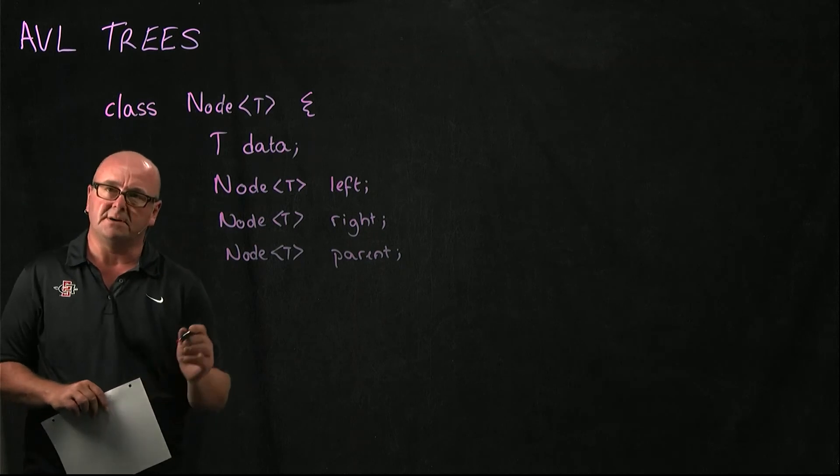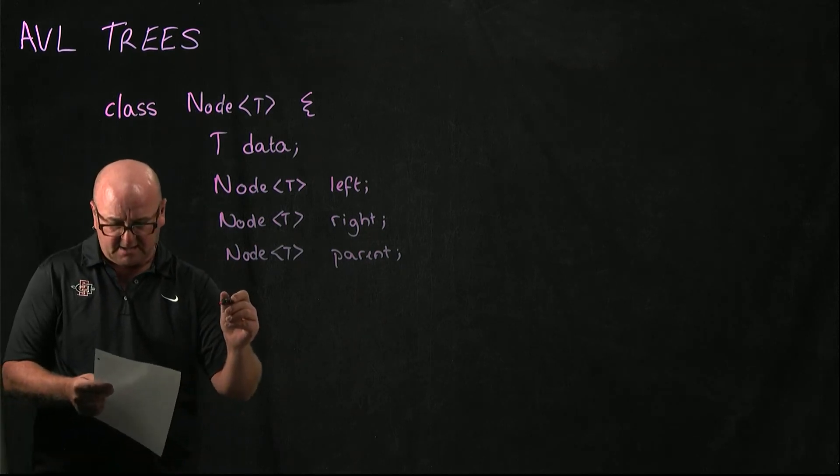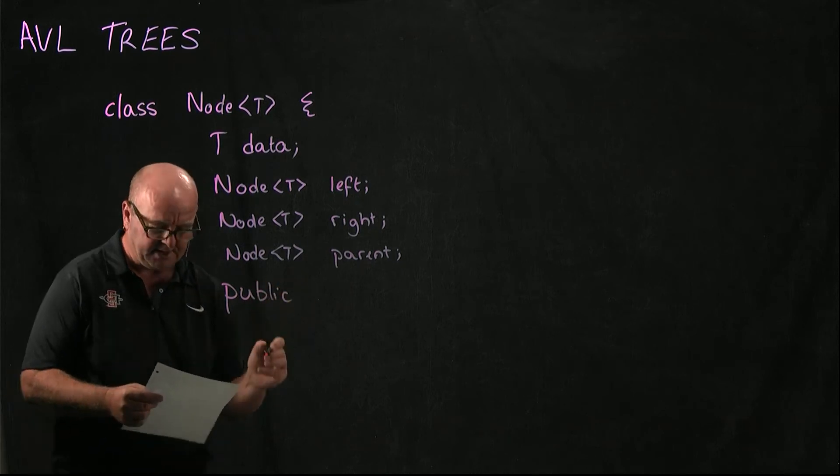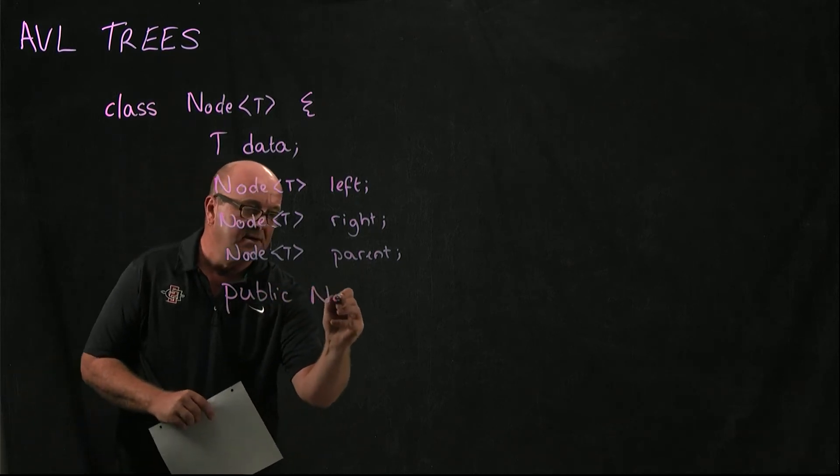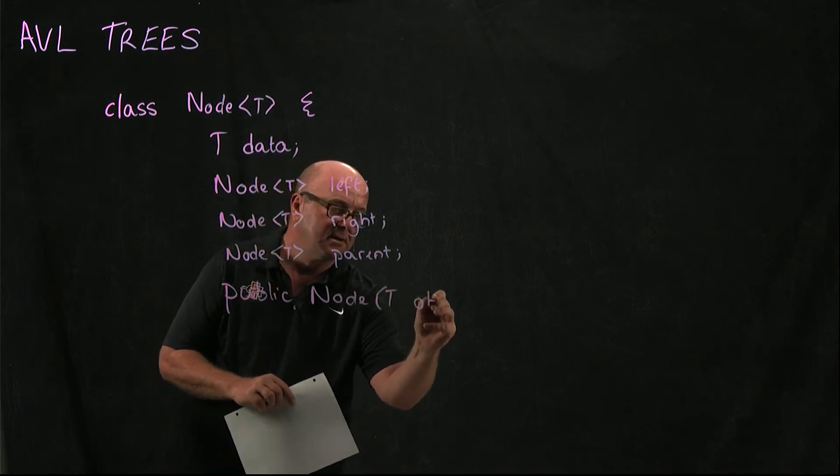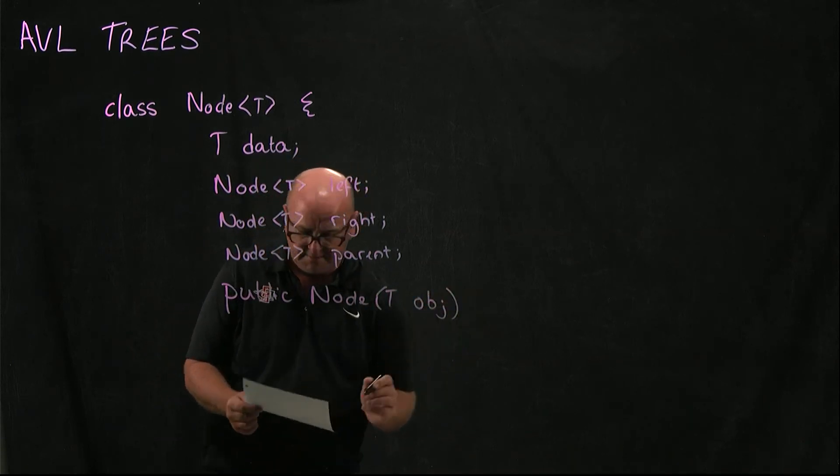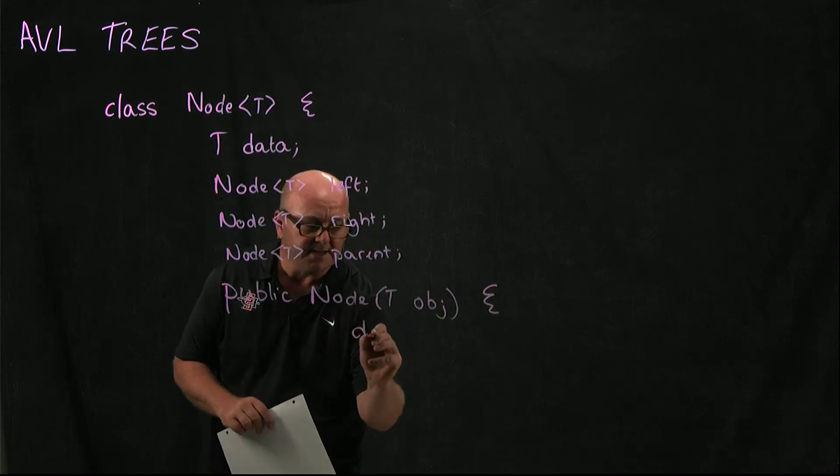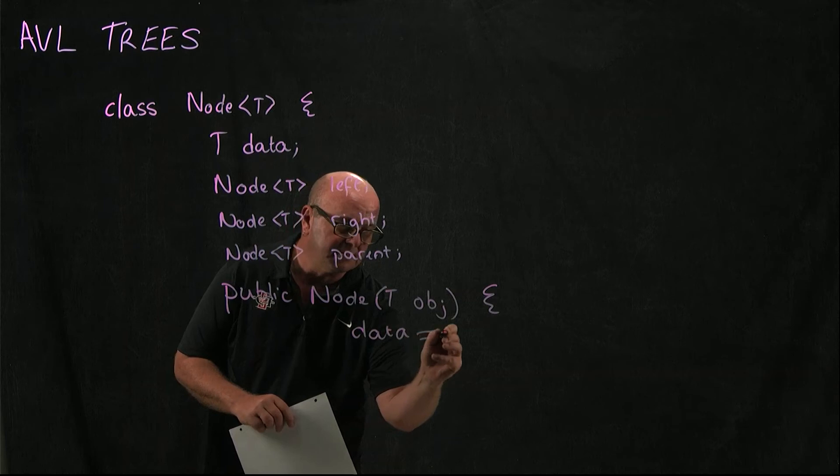And then for our node, we need to have our constructor, and our constructor is going to look something like this. So here's our node with the object that we got given to store in the node. We set data equal to object.